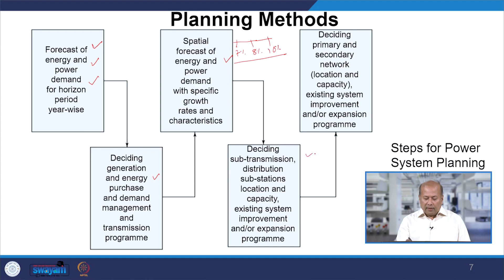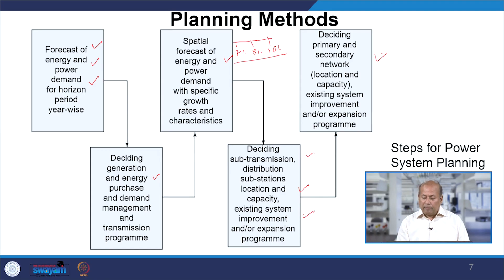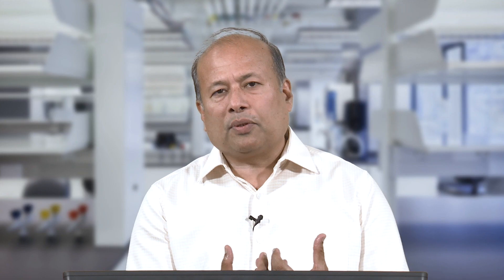Then decide sub-transmission and distribution substation locations and capacity. As discussed earlier, how the load is going to grow in a particular area needs to be analyzed so that substations are planned before expansion. Finally, decide primary and secondary network locations and their capacity for existing system improvement and expansion programs. This is essentially a feedback mechanism: plan the forecasting, plan energy procurement, go for substation and distribution networking, and then implement.